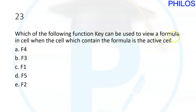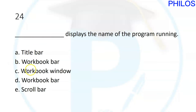Question twenty-three: which function key can be used to view a formula in a cell when that cell is the active cell? You can double-click the cell or see the formula in the formula bar, but the question asks for the function key. The answer is E: F2. Press F2 to view the formula in the active cell.